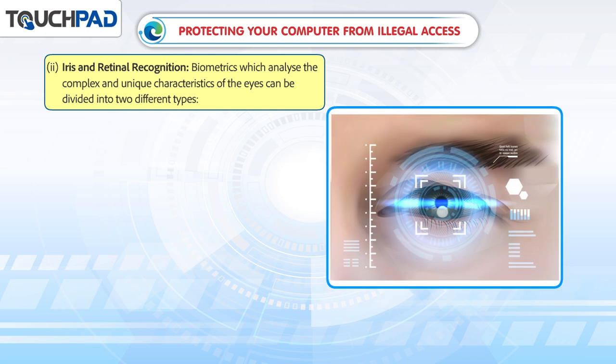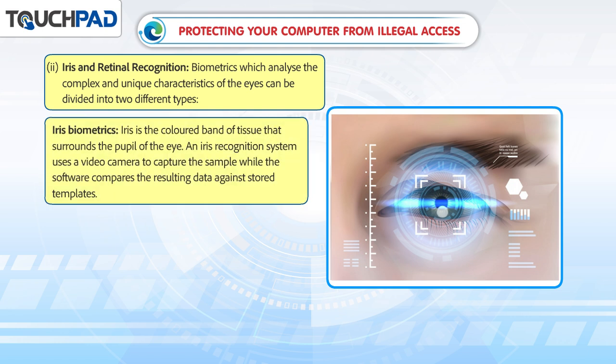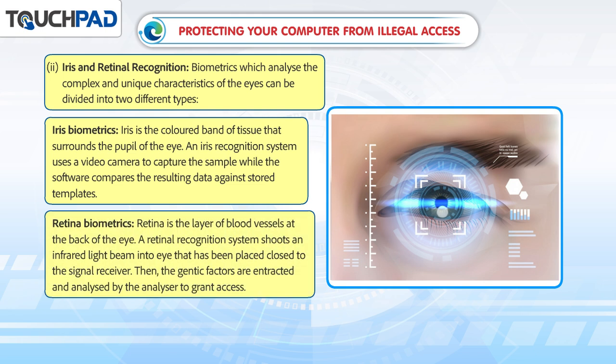Iris and retinal recognition — biometrics which analyze the complex and unique characteristics of the eyes — can be divided into two different types. Iris biometrics: the iris is the colored band of tissue that surrounds the pupil of the eye. An iris recognition system uses a video camera to capture the sample while software compares the resulting data against stored templates. Retina biometrics: the retina is the layer of blood vessels at the back of the eye. A retinal recognition system shoots an infrared light beam into the eye placed close to the signal receiver, and then the unique factors are extracted and analyzed to grant access.